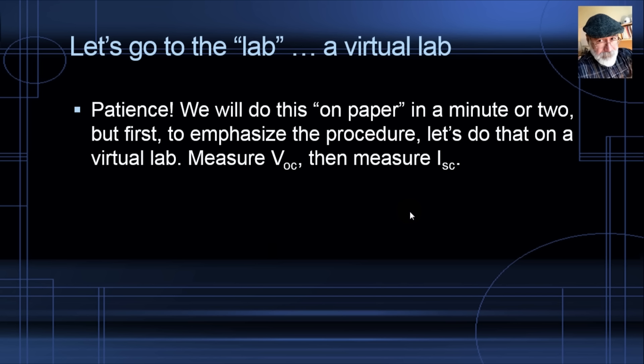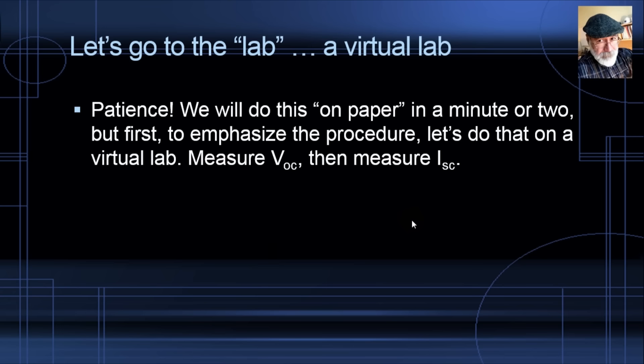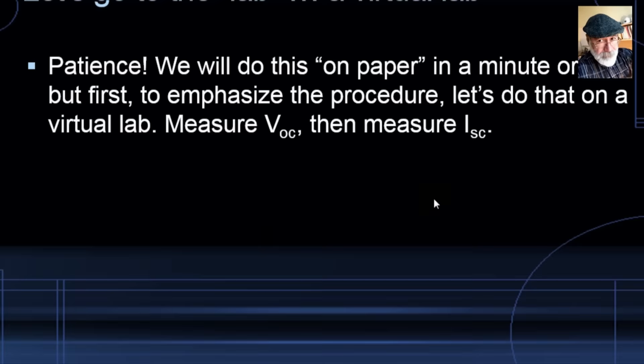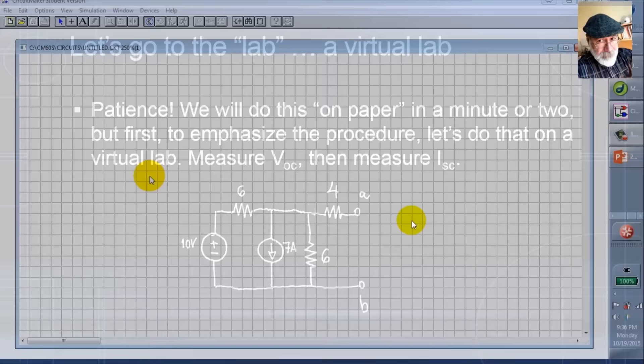Now let's go to the virtual laboratory to emphasize the procedure — open circuit test, then short circuit test. For our circuit: two sources (a 10 V voltage source and a 7 A current source), two 6-ohm resistors, and one 4-ohm resistor. We want the Thevenin-Helmholtz equivalent at port AB, so we need VOC and then the short circuit current between A and B.